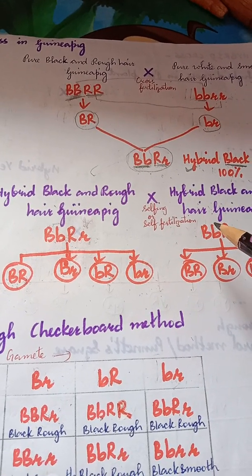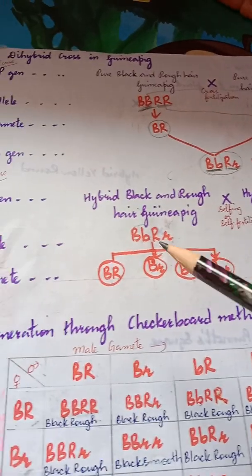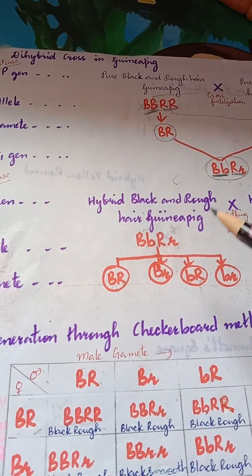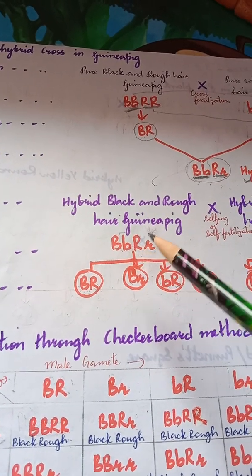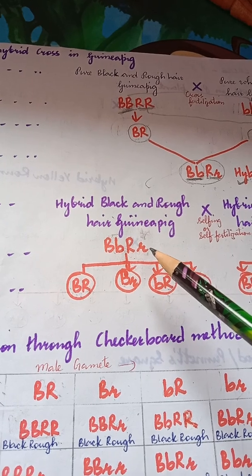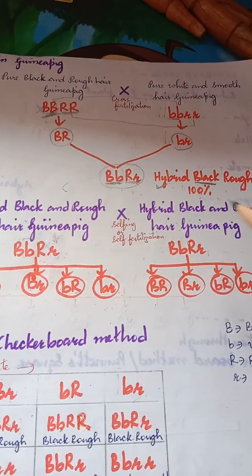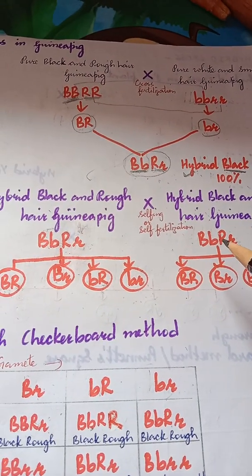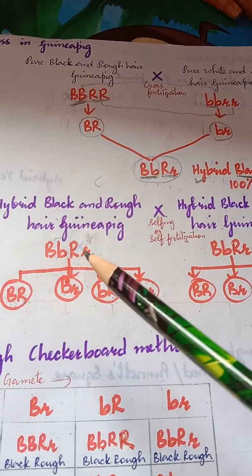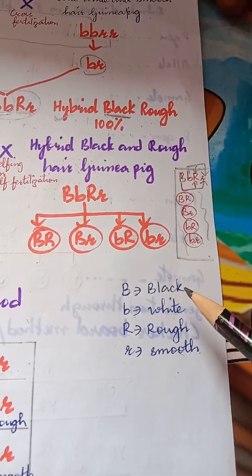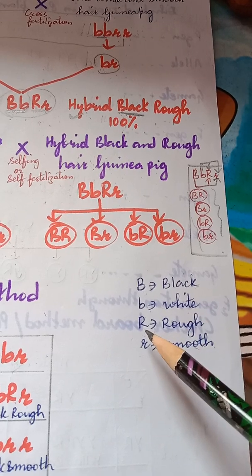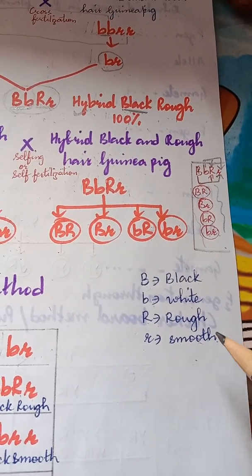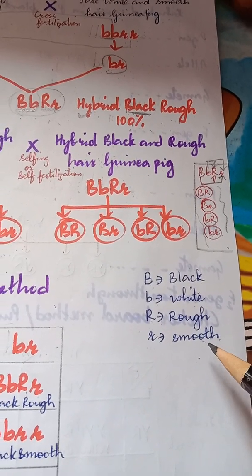The allele for the hybrid black and rough guinea pig will be capital B, small b, capital R, small r — and for the other parent it is the same. Capital B means black, small b means white, capital R means rough, and small r means smooth.